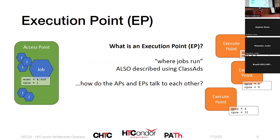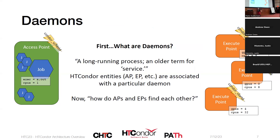Where do jobs actually run? That's the execution point — servers where jobs are executed. Execution points are also described using ClassAds, with attributes that may differ from but overlap with a job's ClassAds, which matters because we want execution points and access points to be able to communicate. This communication happens through daemons — long-running processes, an older term for service. The access point has the condor_schedd daemon, and the execution point has the condor_startd daemon.